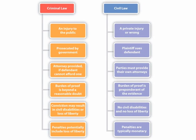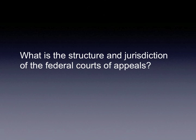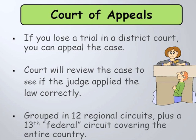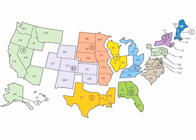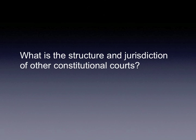A federal civil case is one which involves non-criminal matters. The courts of appeals were created in 1891 to handle much of the burden that the Supreme Court faced in ruling on appealed cases. Altogether, 179 circuit judges sit in the 12 appeals courts, and a Supreme Court justice is also assigned to each of the circuits. The courts of appeals only have appellate jurisdiction, hearing cases on appeal from lower federal courts.